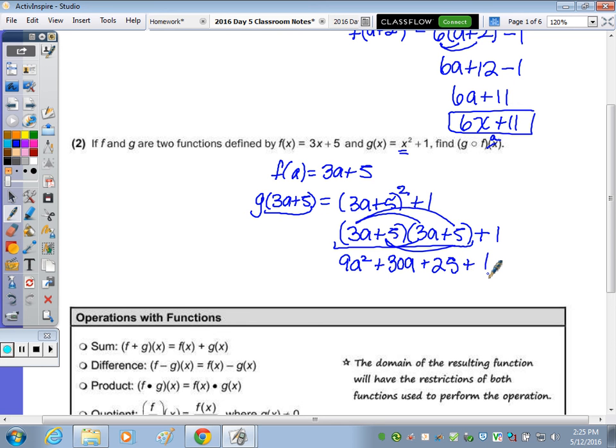5 times 5 is 25, and then we need to add the 1. So to write my final answer, I'm going to go back and put the X in. So it's 9X squared plus 30X plus 26.